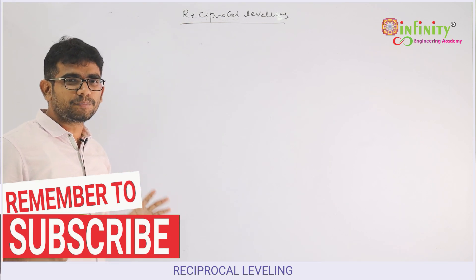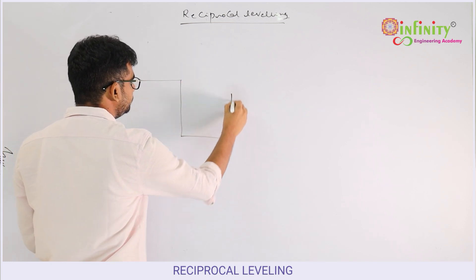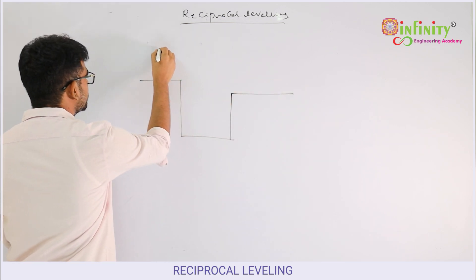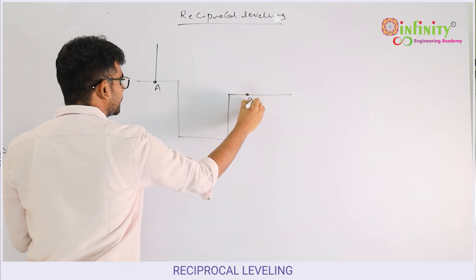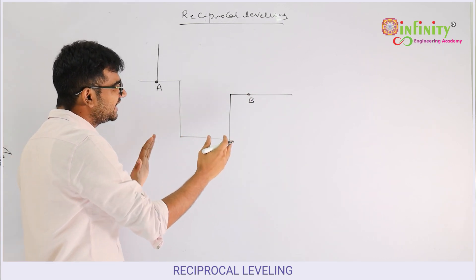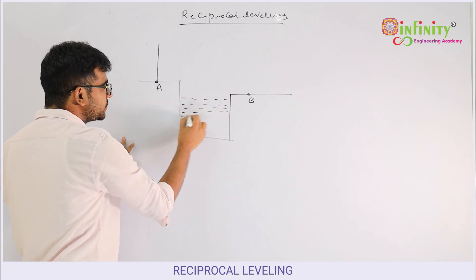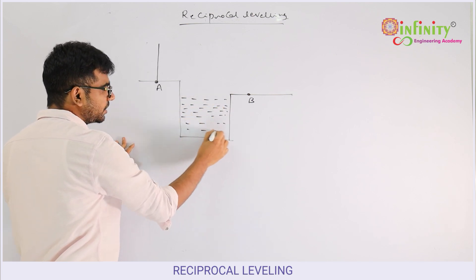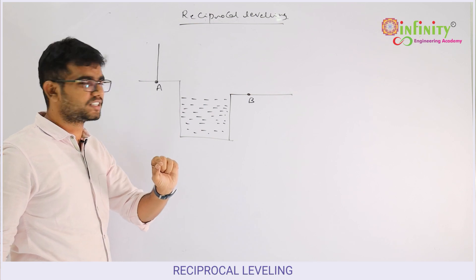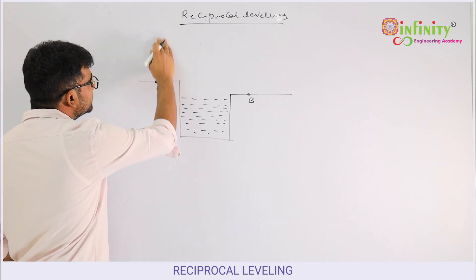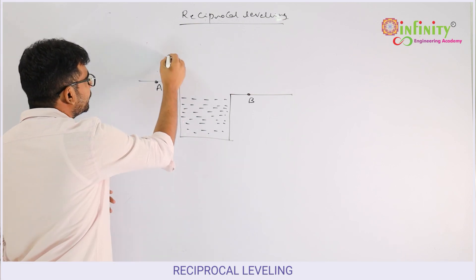First, let's see what is the purpose of reciprocal leveling. Suppose there are two stations in the field — station A and station B. If you want to conduct simple leveling, the problem is that maybe a stream is flowing between the two points, so you cannot set up the instrument in between them. In that case, we conduct reciprocal leveling.